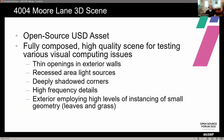404 Moore Lane is an open source USD asset whose purpose is to provide a fully composed, high-quality scene for testing various visual computing issues. The house is designed around a number of typical problem areas for light transport and noise sampling. We have thin openings in exterior walls, recessed area light sources, deeply shadowed corners, and high frequency details — all stops on the tour of issues surrounding the house interior. The exterior landscape surrounding the house is comprised of a relatively simple ecosystem of instanced plants, which can provide additional levels of complexity.